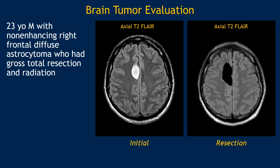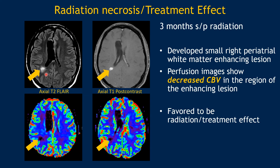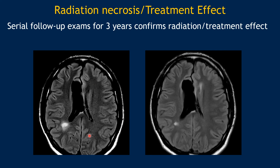This is another young patient who had a right frontal diffuse astrocytoma that was nicely resected. Three months after radiation therapy, a new lesion was seen in the right periventricular white matter showing some post-contrast enhancement. On conventional imaging, it would be difficult to tell whether this is recurrent or residual tumor. However, on DSC perfusion, that same area of nodular enhancement shows decreased or low perfusion, consistent with radiation effect. We followed this patient for many years, and three years later that same area decreased in size, confirming probable radiation necrosis or radiation effect.